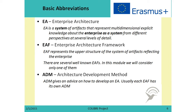The next abbreviation is EAF, which stands for Enterprise Architecture Framework. The Enterprise Architecture Framework shows the upper structure of the system of artifacts reflecting the Enterprise, or the knowledge about the Enterprise. There are several well-known Enterprise Architecture Frameworks, but in this module we will mainly consider only Zachman's Enterprise Architecture Framework. The third abbreviation is ADM, which stands for Enterprise Architecture Development Method. The Enterprise Architecture Development Method gives advice on how to develop Enterprise Architecture, and usually each Enterprise Architecture Framework has its own Enterprise Architecture Development Method.